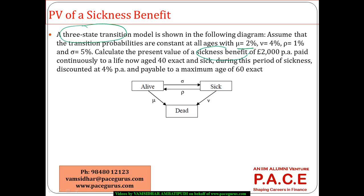Calculate the present value of the sickness benefit. To get the present value, I am looking at the amount of sickness benefit multiplied by the probability of being in the same sick state. Whatever time T is — right now he is 40 — by the time he reaches age 40 plus T, he is still in the sickness state itself. He can go to another state and come back, but he must be in the sickness state to receive the benefit.